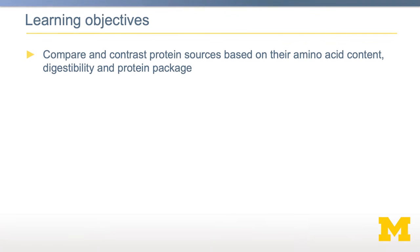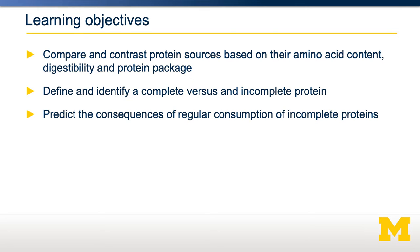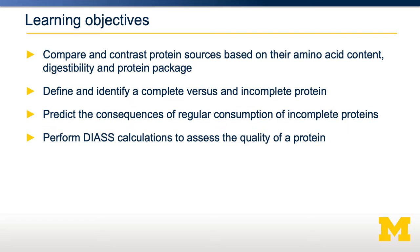In this video, we're going to talk about what protein quality means, including some calculations that you can use to determine the quality of a protein source. We're going to compare and contrast protein sources based on their amino acid content, their digestibility, and the protein package. We're going to define what a complete protein is and compare that to an incomplete protein, predict the consequences of regular consumption of incomplete versus complete proteins, and perform a DIASS calculation to quantify the quality of a protein.